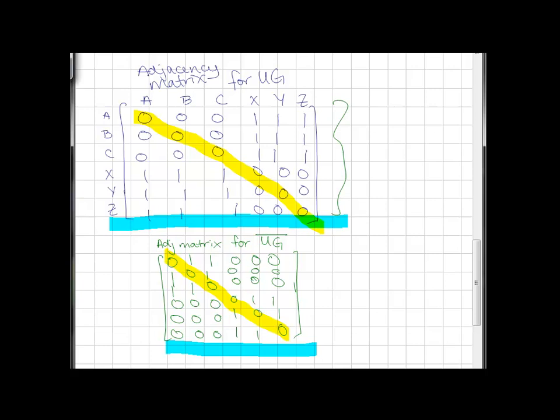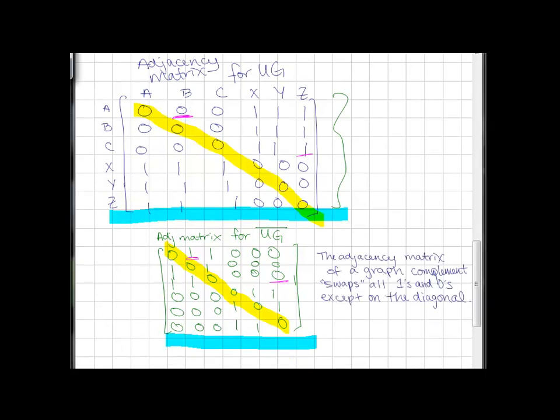But everywhere else, you'll see, oh, notice there's a zero in the AB spot here, here there's a one. There's a zero in the CZ spot in the utility graph's complement, but in the CZ spot in the original graph there's a one. And that is not for any reason of coincidence. It turns out that the adjacency matrix of a graph versus a graph complement will swap the role of ones and zeros, except on the diagonal.